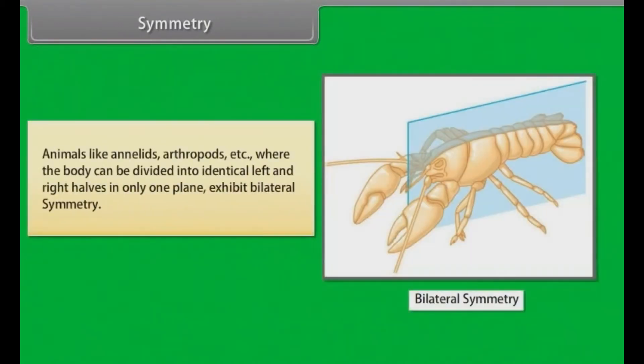Animals like annelids, arthropods, etc. where the body can be divided into identical left and right halves in only one plane exhibit bilateral symmetry.